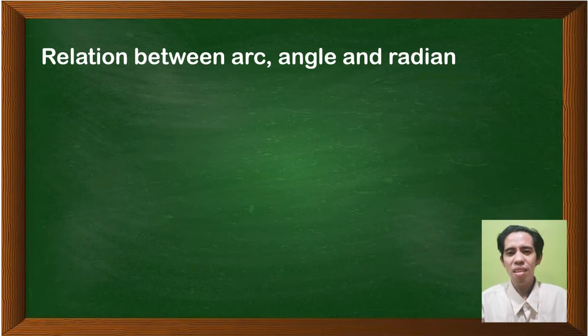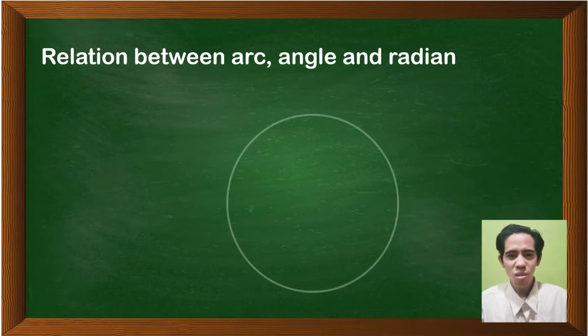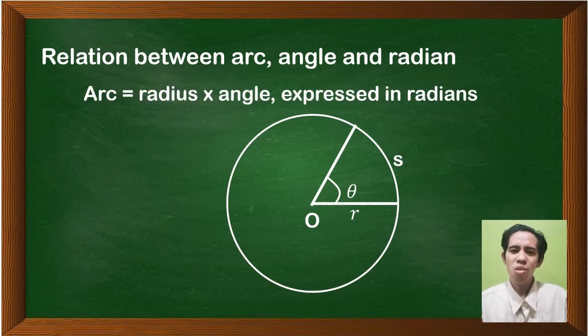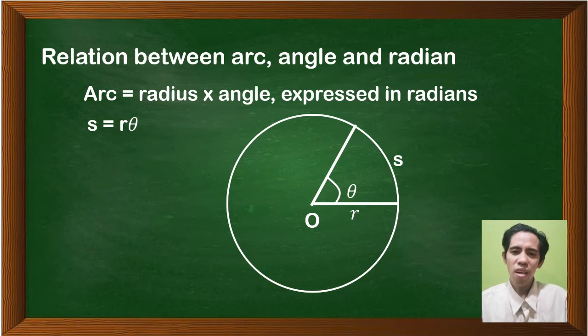Now that you know how to convert between radians and angle measure, we proceed to the relation between angle and arc length. We have circle O with a central angle theta and an intercepted arc S. The formula is: arc S is equal to radius R times the angle expressed in radians. In symbols, S equals R times theta.